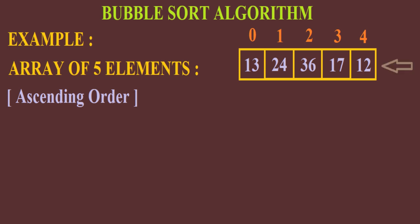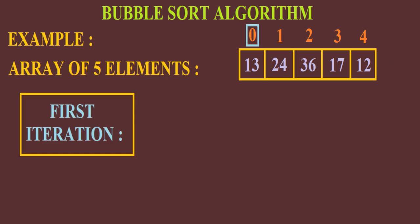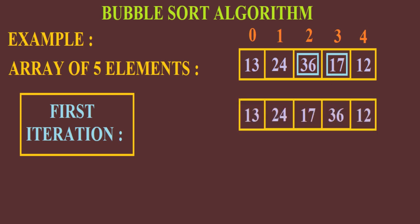In this example we can see that we have five elements and their indexing is from 0 to 4. In the first iteration, at index 0, the first element is 13. It will be compared to the next element which is 24, and the greater element between the two will go towards the right if necessary. But 13 is smaller than 24, so no swapping will happen. Then 24 and 36 will be compared and as 24 is smaller than 36, it will remain in its same place. Then 36 will be compared to 17 and since it is greater than 17, they will interchange positions. Then 36 and 12 will be compared and since 36 is greater than 12, they will again interchange positions.